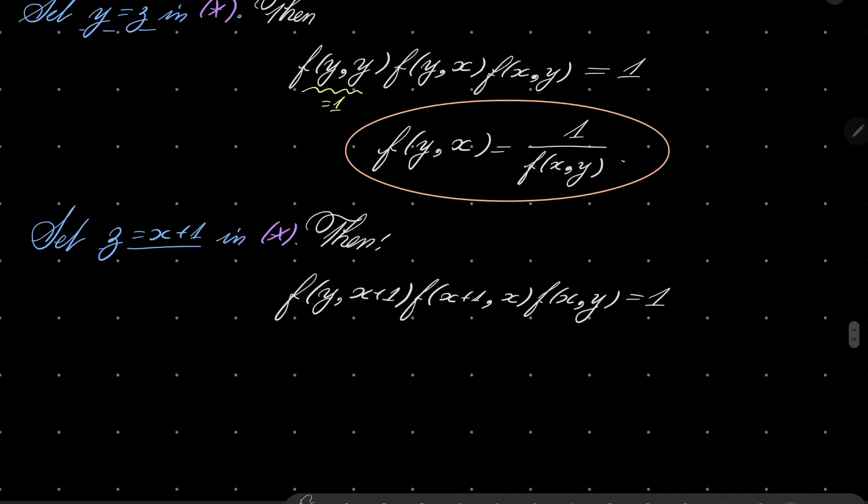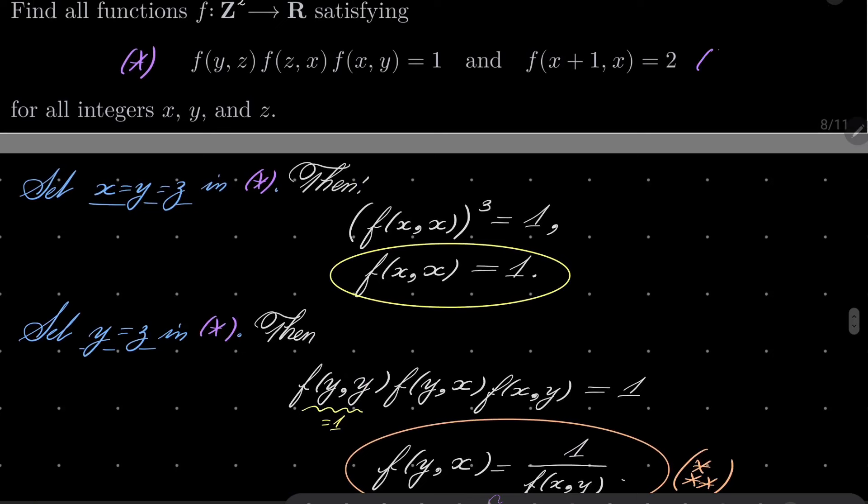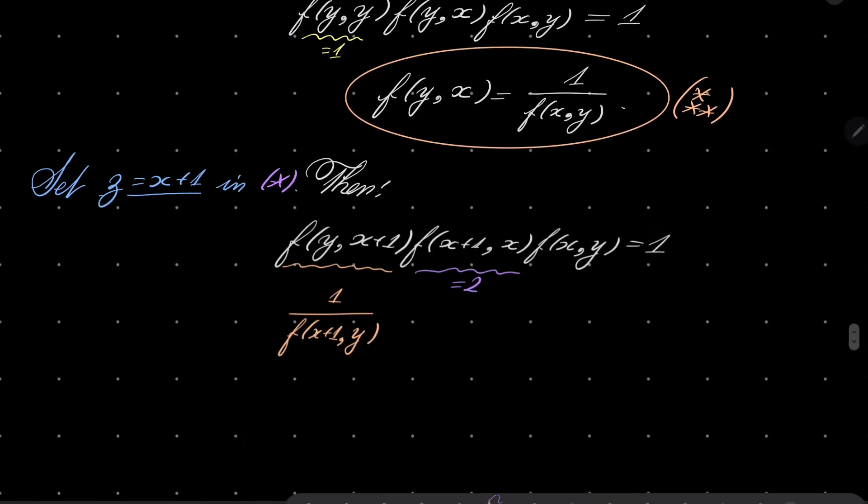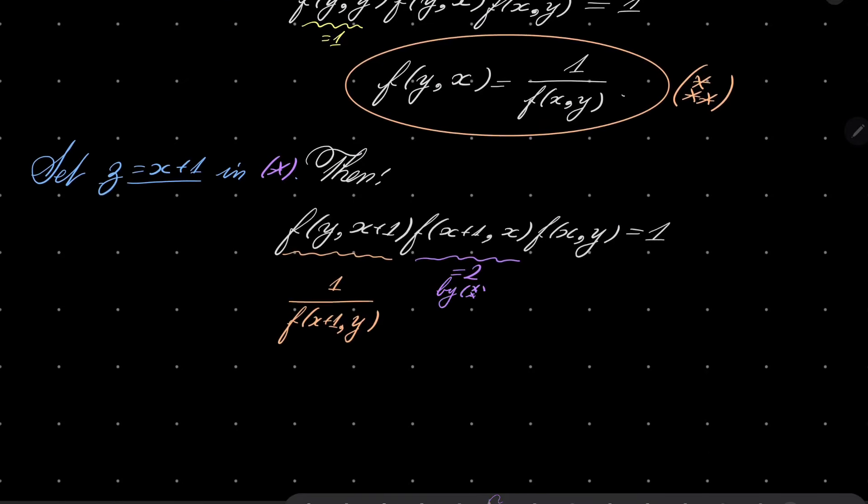And now, I will do the following. First of all, this first expression, f(y,x+1), using our condition, which I will mark triple asterisk, it's just the same as 1 over f(x+1,y). Well, the second part, what about the second part? The second part is equal to 2. Oh, do you know it? Because of my second assumption by double asterisk. f(x+1,x) is 2. By condition double asterisk. So it's times, let's put it lower, so it's times 2 times f(x,y)